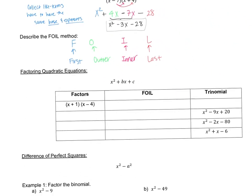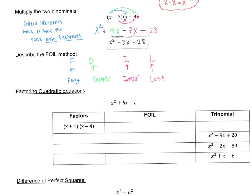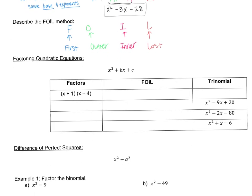Let's practice the FOIL method and also learn about factoring. Foiling is when you have two sets of binomials in parentheses, multiply everything out, combine like terms, and get what's called a trinomial. So we went from two binomials to one trinomial — tri means three, nomial means term, so three terms. I also want to mention that this trinomial is a quadratic equation in standard form, which we'll revisit when we tie this in with quadratic equations.